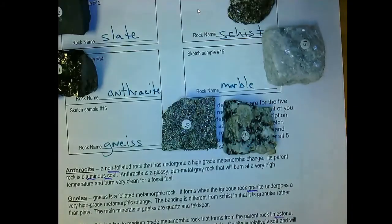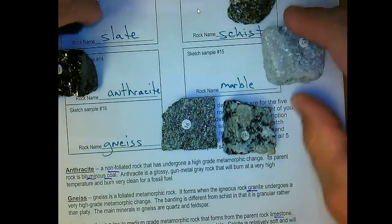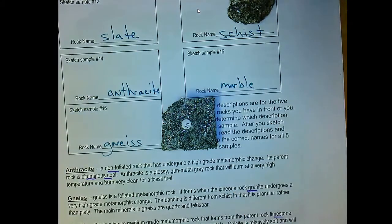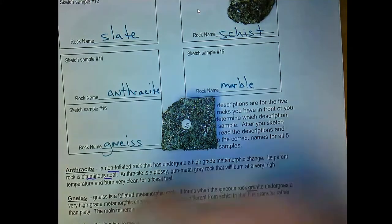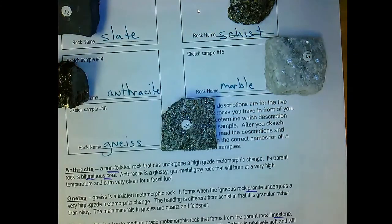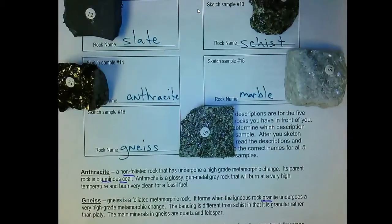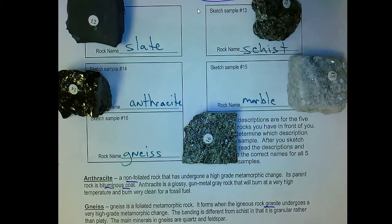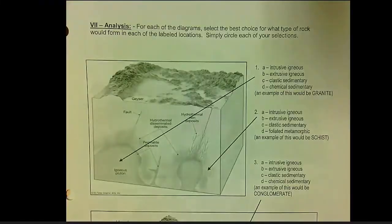Hopefully you had the chance to identify several of those and were quite successful. Remember for metamorphic rocks, you are looking at foliation or non-foliation, trying to determine the story these rocks tell — whether it was low-grade or high-grade metamorphic change. Now let's transition to part two of the lab.